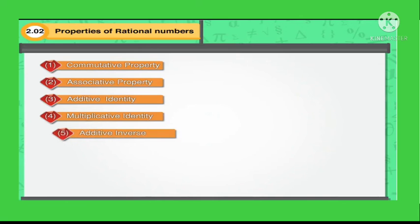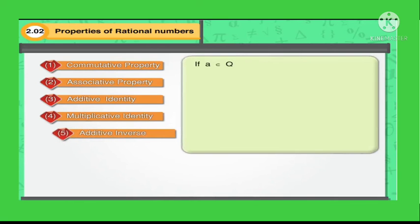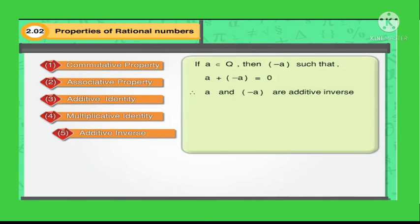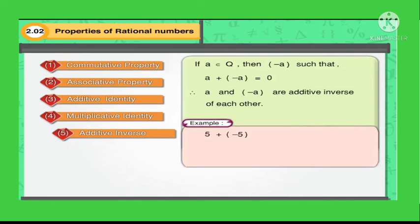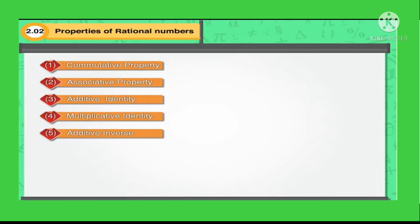The fifth property is additive inverse. If A is any rational number, then minus A is such that A plus (minus A) is equal to 0. Here, A and minus A are additive inverses of each other. For example, 5 plus (minus 5) equals 0 and minus 5 plus 5 is also equal to 0. So, minus 5 is the additive inverse of 5.